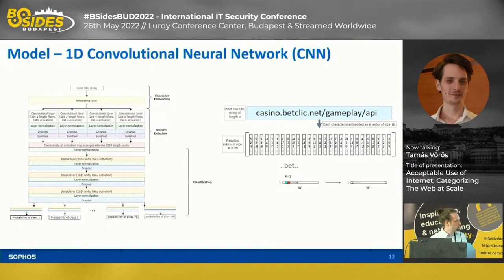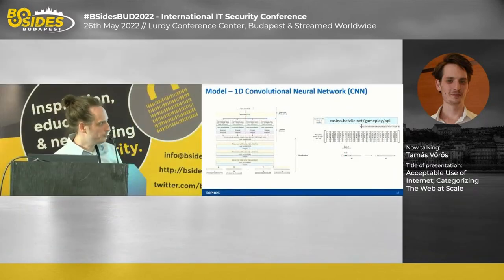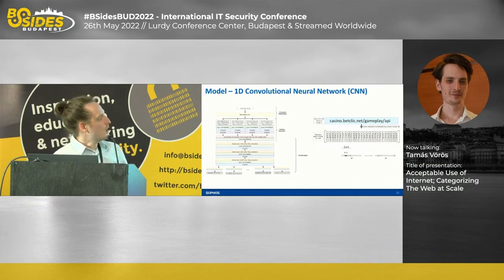There is an example on the right: we have 'casinobattle.net' as an input URL. It is converted into its numeric representation by the embedding layer. Then we pick a convolutional window that slides over this string. If we set the kernel size equal to 3, it will slide from the beginning with step size 1, capturing the numeric representation of 'cas', 'asi', 'sin', and so on — essentially all three-length substrings of the URL. We do this with window lengths 2, 3, 4, and 5.